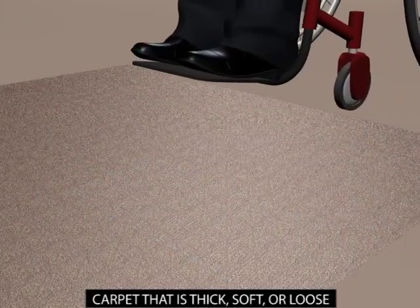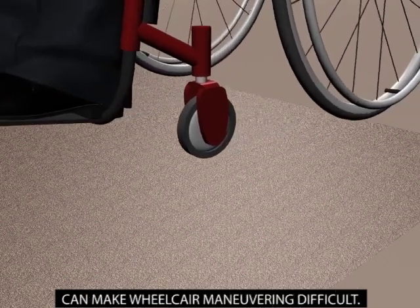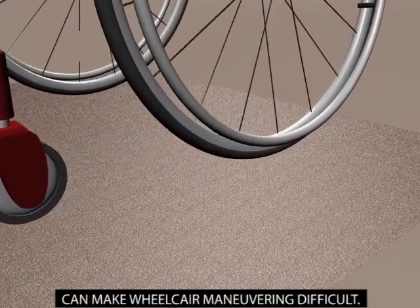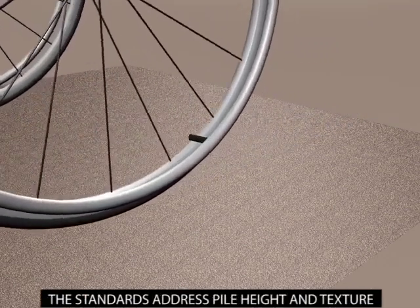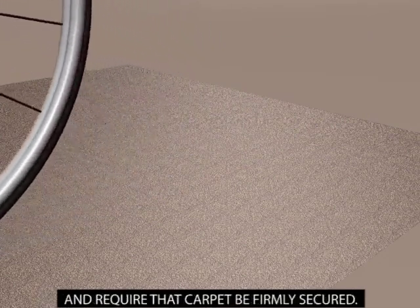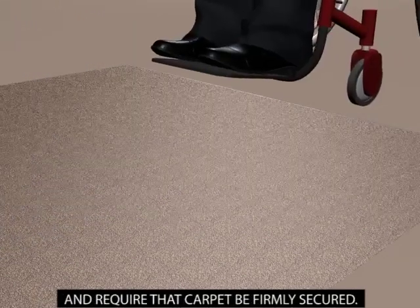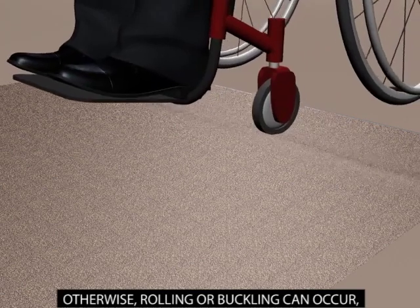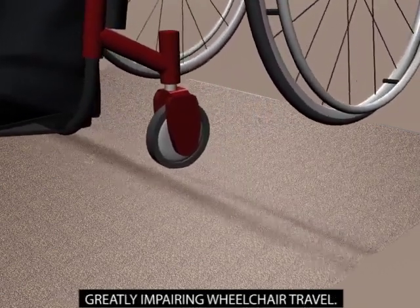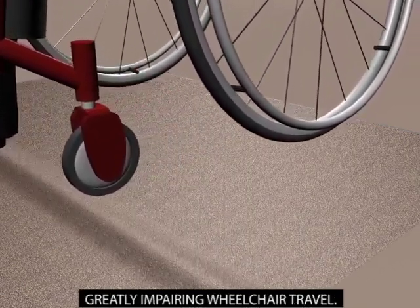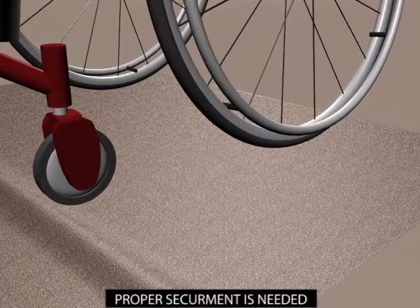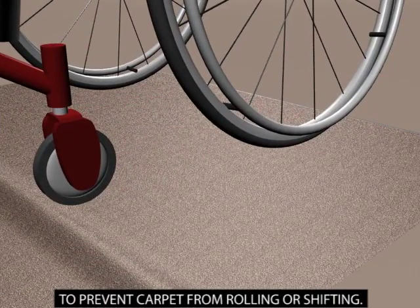Carpet that is thick, soft, or loose can make wheelchair maneuvering difficult. The standards address pile height and texture and require that carpet be firmly secured. Otherwise, rolling or buckling can occur, greatly impairing wheelchair travel. Proper securement is needed to prevent carpet from rolling or shifting.